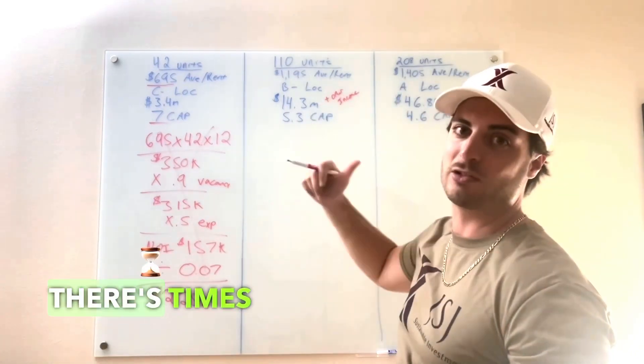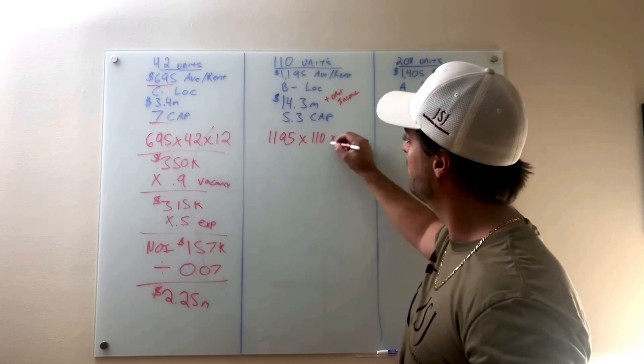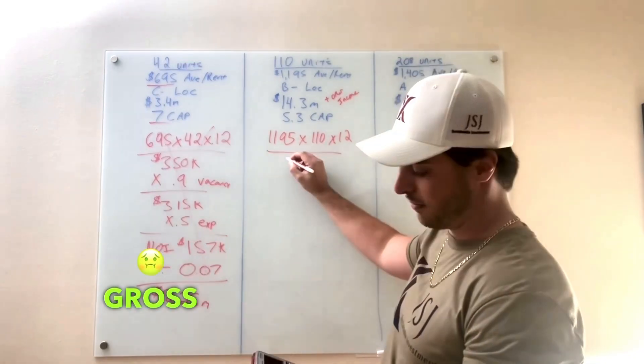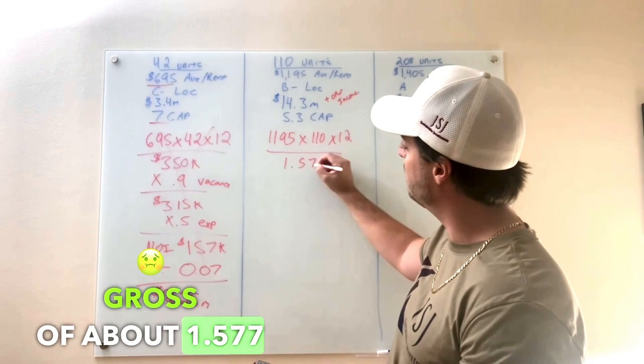Because there are amenities, there's times 110 units, times 12 months, giving us a gross of about 1.577 million.